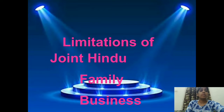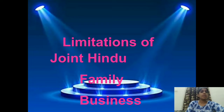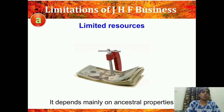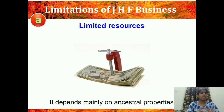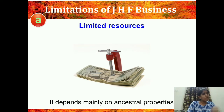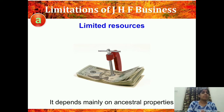Now let us see the demerits or limitations of joint Hindu family business. The first limitation is limited resources — the resources are limited. There is one business and one family, and it depends mainly on the ancestral property. If the market structure is not good, there is inflation and deflation, and you may suffer because everyone is in the same business. Limited resource is a drawback of JHF — sometimes they don't have enough resources to invest in the business.